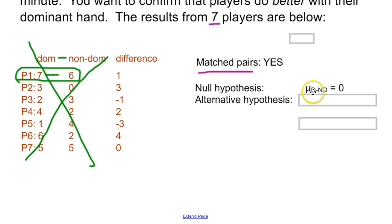So we have mu is equal to zero. And I always use that subscript here, this D minus ND, which stands for dominant minus non-dominant, to remind me what that difference really is made up of and what order it happens in.